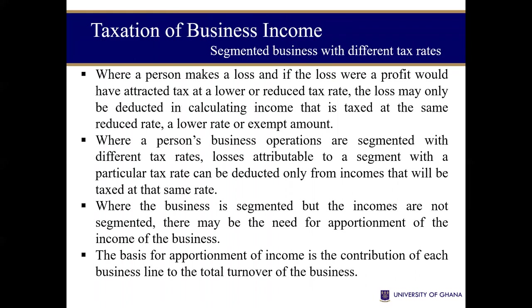Now let's look at businesses that have segments with different tax rates. If you have a conglomerate with different segments — for example, businesses in manufacturing, in media, in other sectors — these sectors may have different tax rates. When you make a loss in one sector, can it be transferred to offset gains in another sector? The rule is that you can only transfer the loss from one sector to another if the tax rate in the other sector is the same or at a lower rate. Some sectors are even exempted from tax altogether, for example the business of a cocoa farmer.